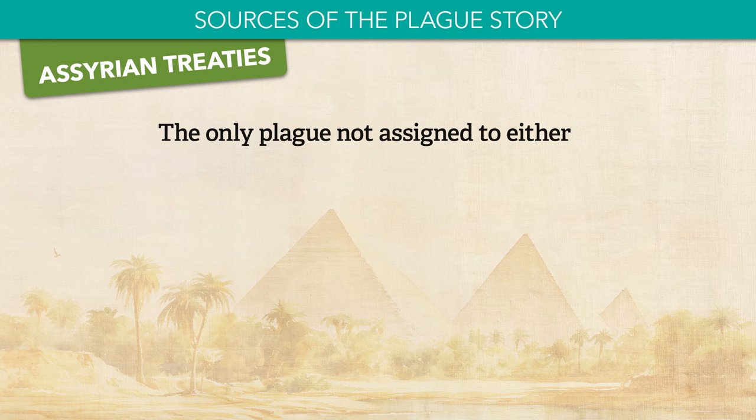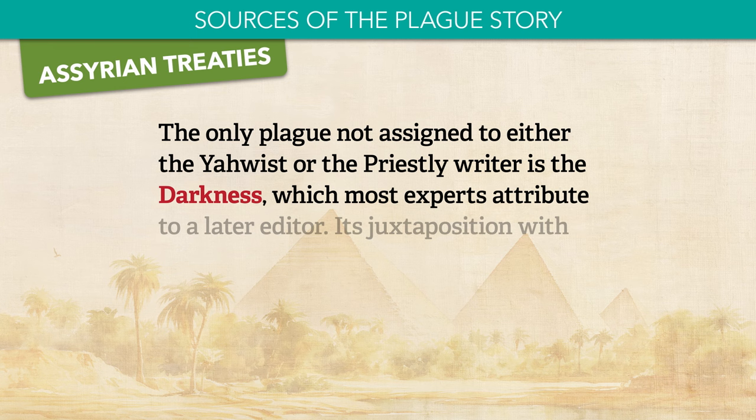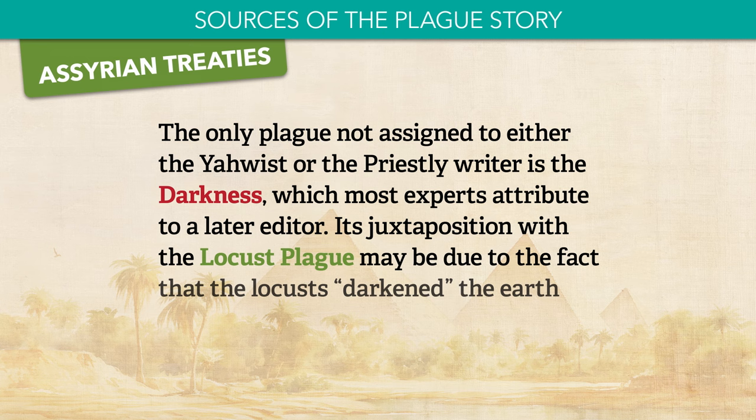The only plague not assigned to either the Yahwist or the Priestly writer is the darkness, which most experts attribute to a later editor. Its juxtaposition with the locust plague may be due to the fact that the locusts darkened the earth from their numbers.